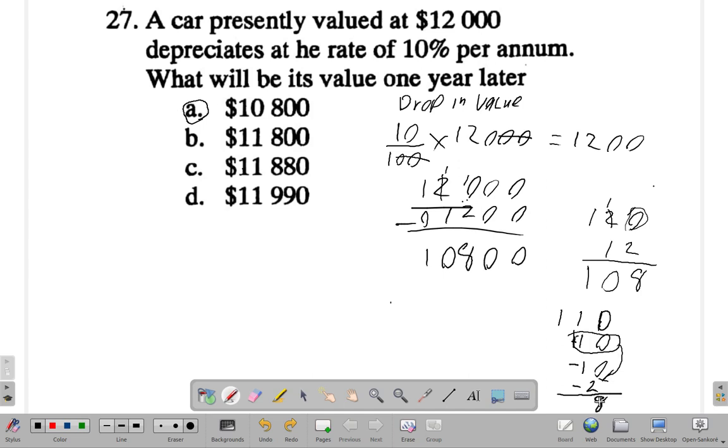Then 1 minus 1. This would be in the tens column here. 1 minus 1 is 0. And 1 minus 0 is 1. So the borrowing really does work.